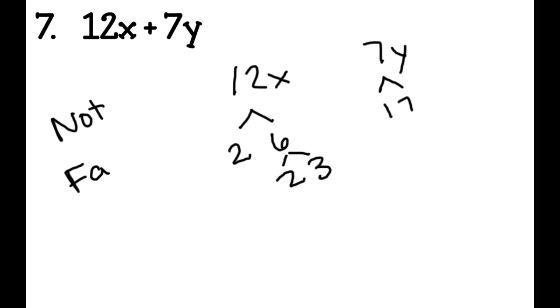Here I have 12x plus 7y. So if you're looking at this, some of you may already know, I don't know about any factors there. But if you're looking at it, what are the factors? You might want to write it out. You go twelve. It would be two and six. And six would be two and three. And then you have 7y and nothing times another number equals seven other than one and seven. So seven is prime. And seven is not a factor of twelve. So this is not factorable. And you just write that on your paper. And then you circle it. And that's my answer.